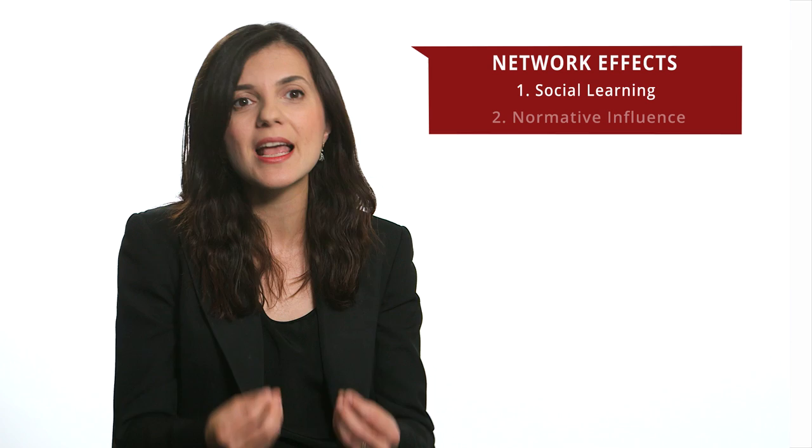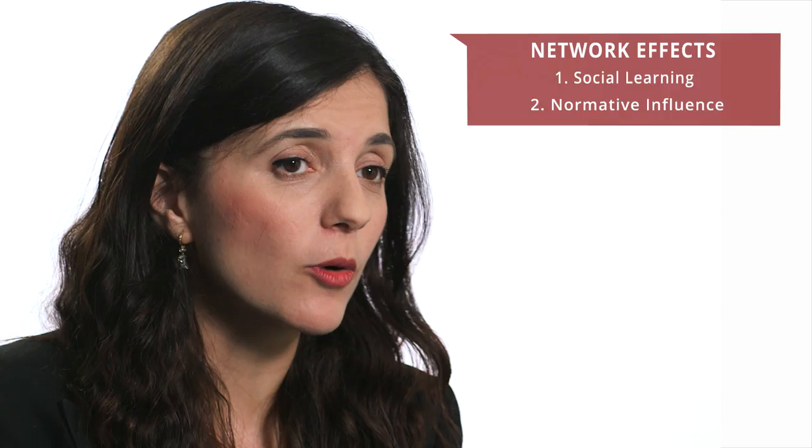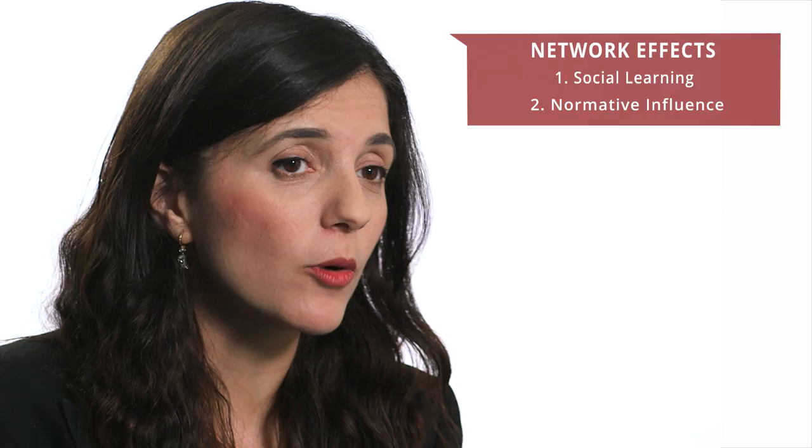The second way social networks can affect us is what we call normative influence, where our social ties can provide sanctioning or rewarding mechanisms and actively try to persuade us. The third mechanism is through network externalities, where having a group of people using a product makes it more valuable at large.